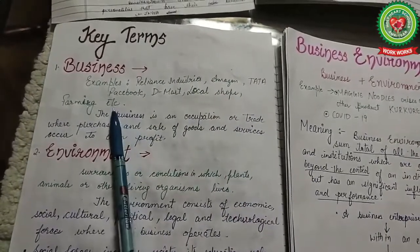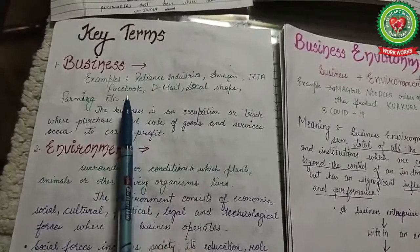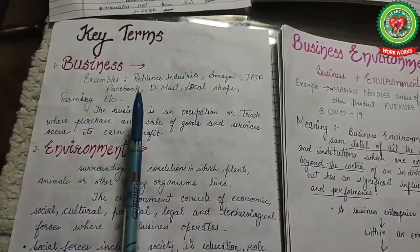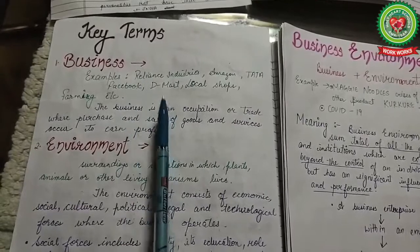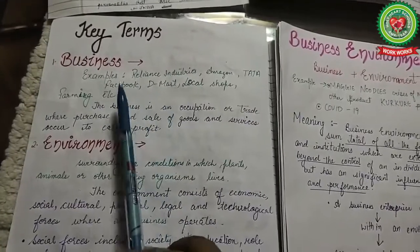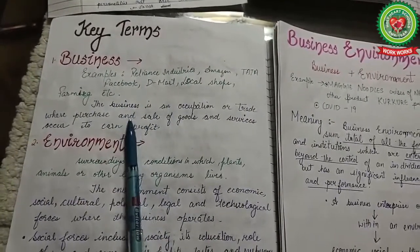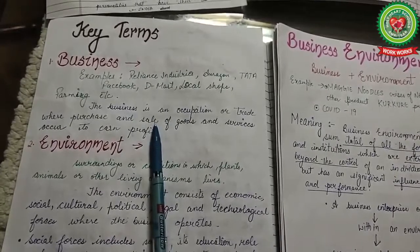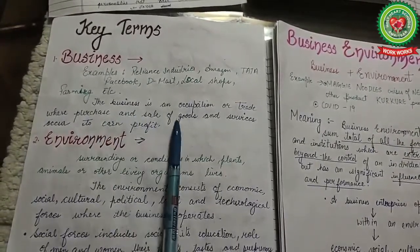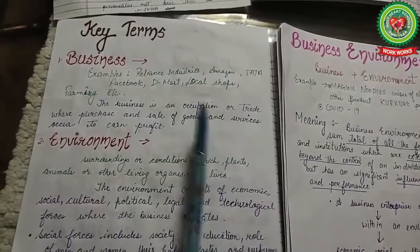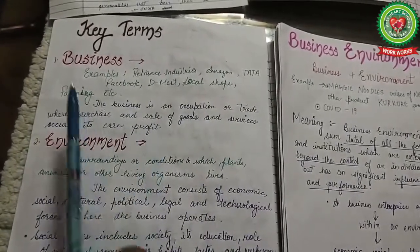For example, if a farmer produces wheat, he first purchases seeds and machinery tools to produce it. After production, he goes for sale. So there is purchase and sale of goods and services, and profit earned from it — that is known as a business.